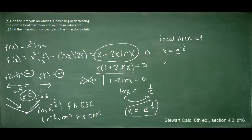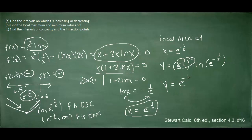We should also find the y-coordinate of the minimum since it is a point. To find the y-coordinate, you plug e to the negative 1 half into the original function — not into the derivative. The original function was x squared multiplied by the natural log of x. We have an exponent raised to an exponent, so we multiply those exponents, leaving us with e to the negative 1. Plugging that into a calculator returns a value of negative 1 half.